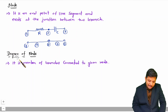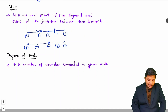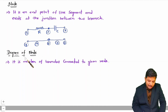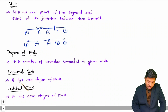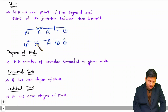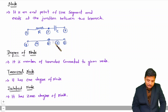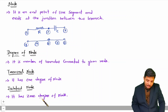The degree of a node defines two types of nodes: terminal node and isolated node. A terminal node has a degree of one — for example, node one and node three each have only one branch connected, so they are terminal nodes. An isolated node has a degree of zero, meaning no branch is connected to that node.